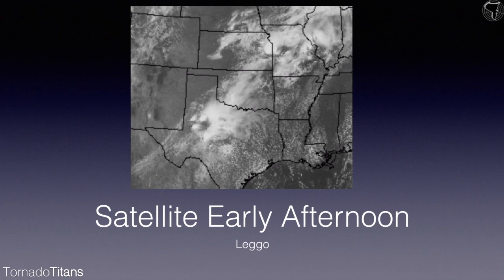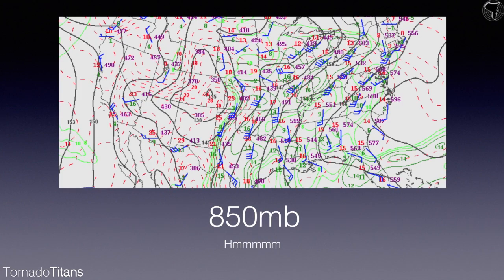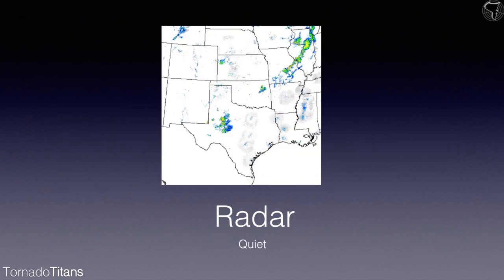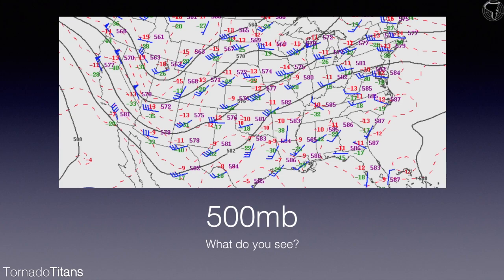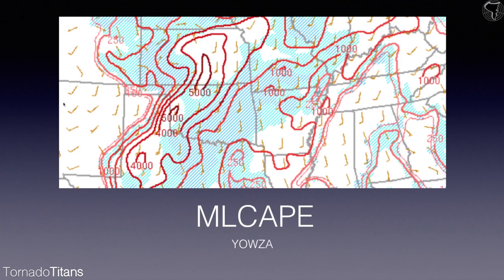It's early afternoon and we're in Wichita trying to figure out where to go. Seeing all this, the areas I'm looking at closely are up here in Kansas and down along the dry line from the Texas panhandle into northwest Oklahoma. I'm concerned about where the stronger winds begin, though — that's a good question. Let's look at instability and some composite parameters to help break the tie. Look at that — 5,000 joules per kilogram of MLCAPE. That is extreme.